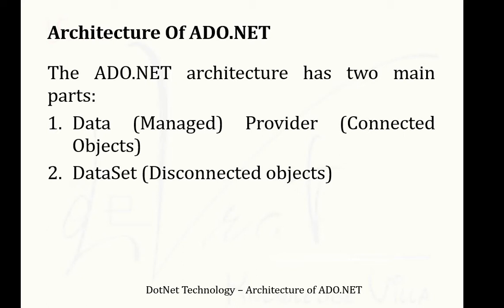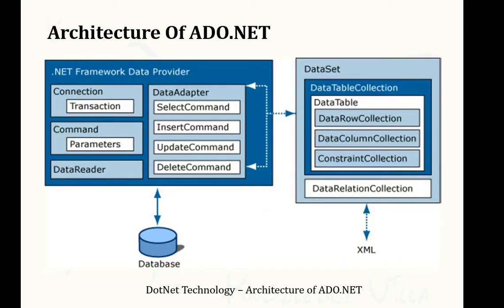ADO.NET architecture has two main parts. The first is the Data Provider, also known as the Managed Provider or connected object. The second is the DataSet, also known as the disconnected object. This is the architecture figure of ADO.NET. We will first understand the .NET Framework Data Provider, shown on the left-hand side, and then the DataSet.